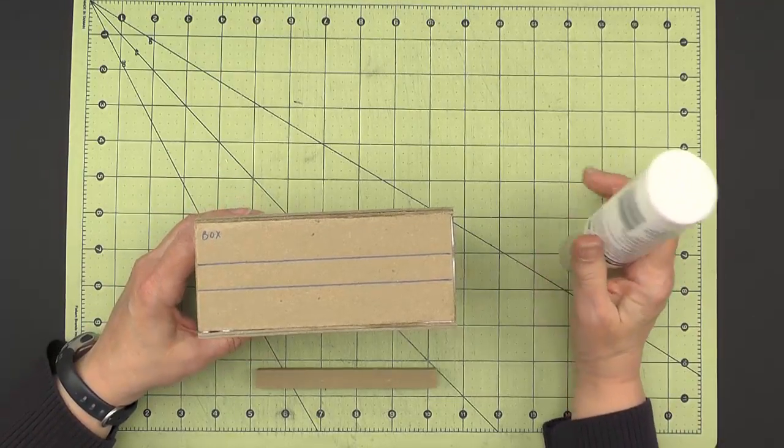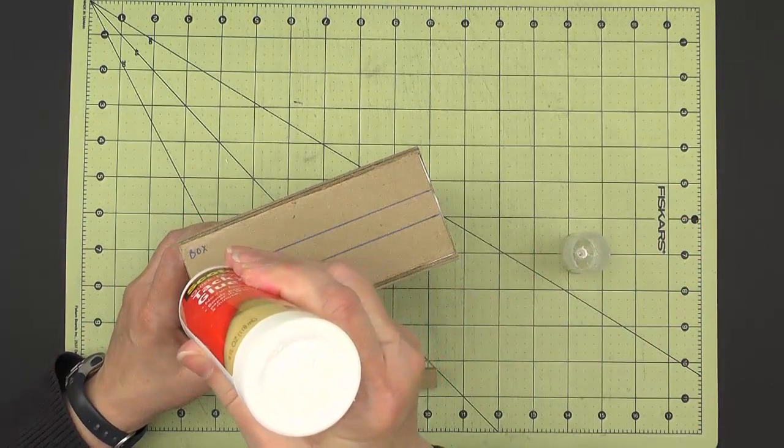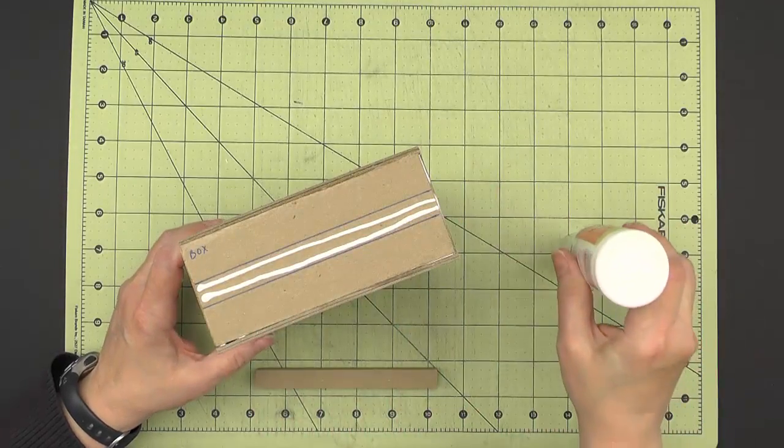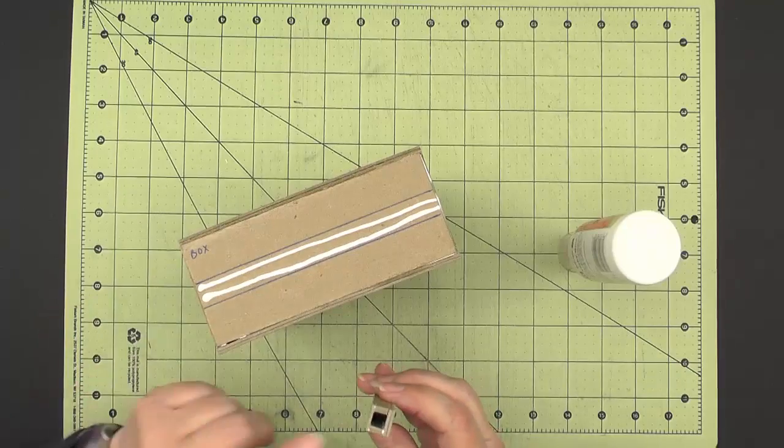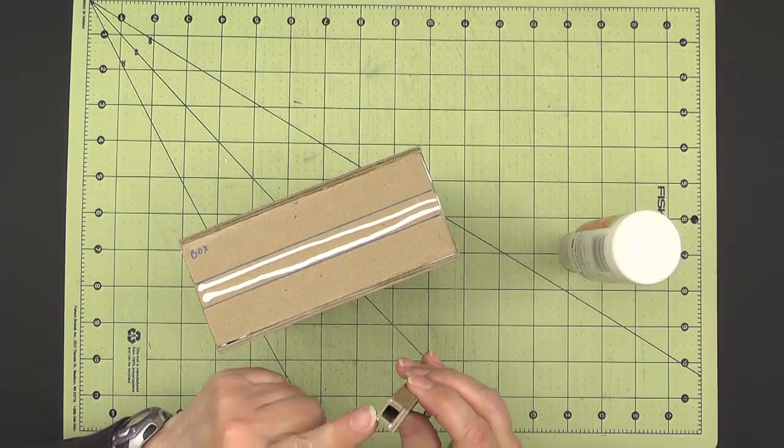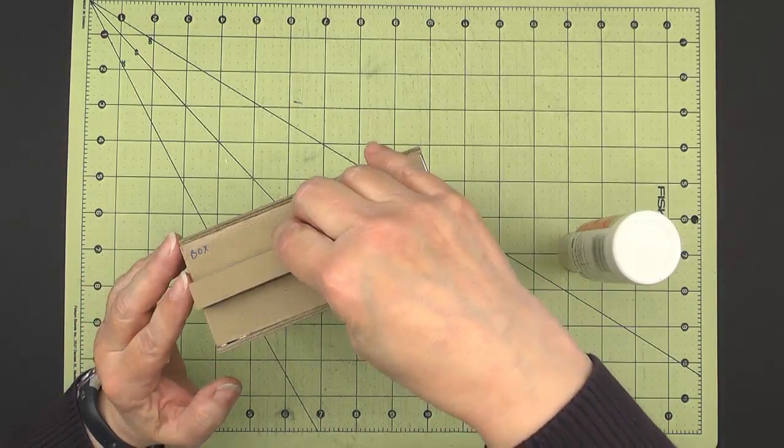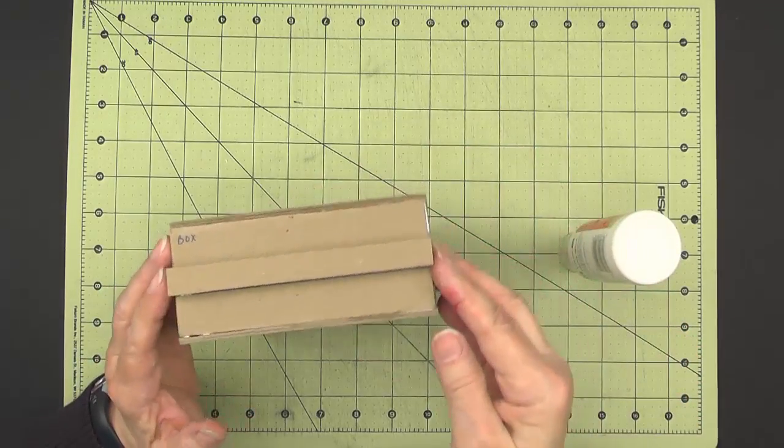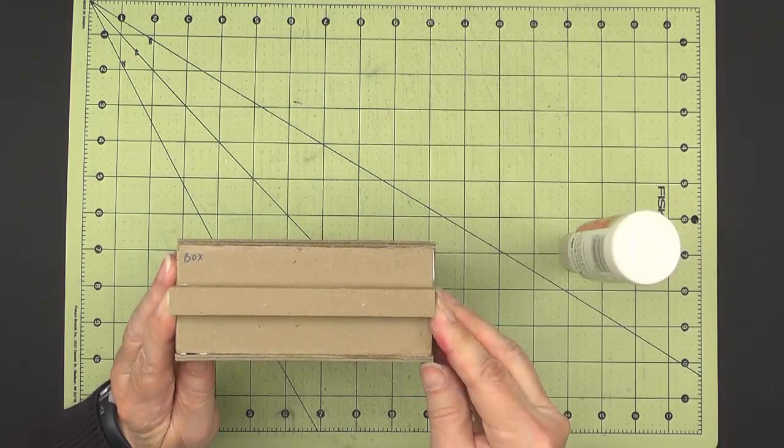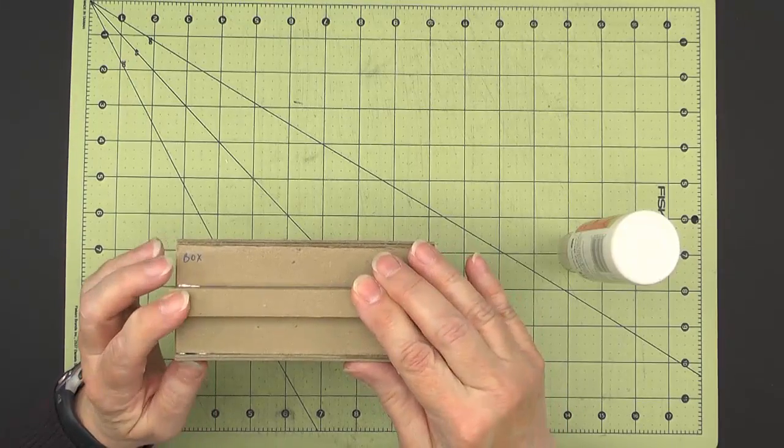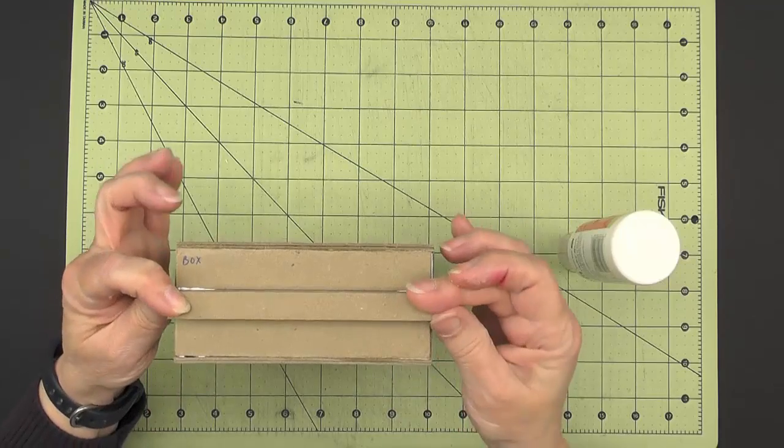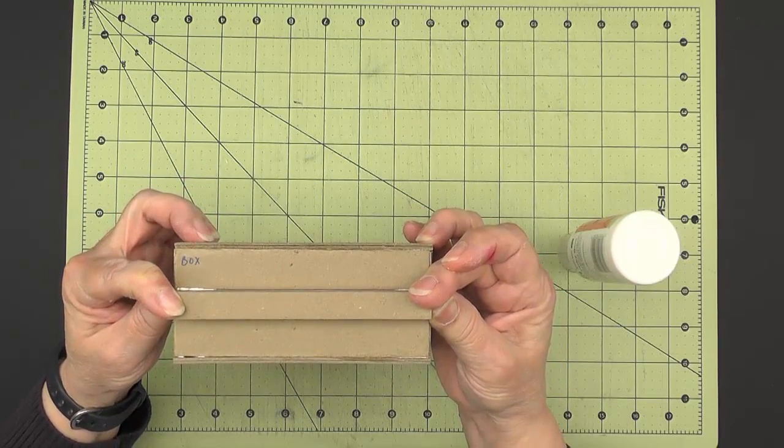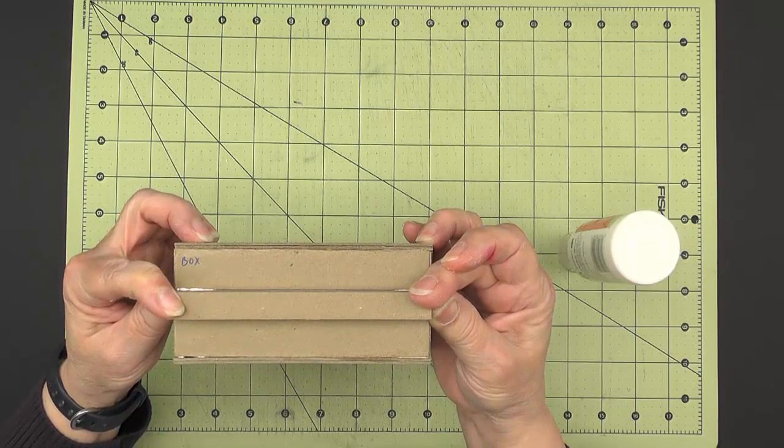And once the box and the channel are dry, we can add the channel where we marked our lines here on the end of the box. And I'm putting the side with a single thickness against the box and using my lines to make sure I've guided it in position correctly. And I'll give that a little pressure and then make sure that that is thoroughly dry.